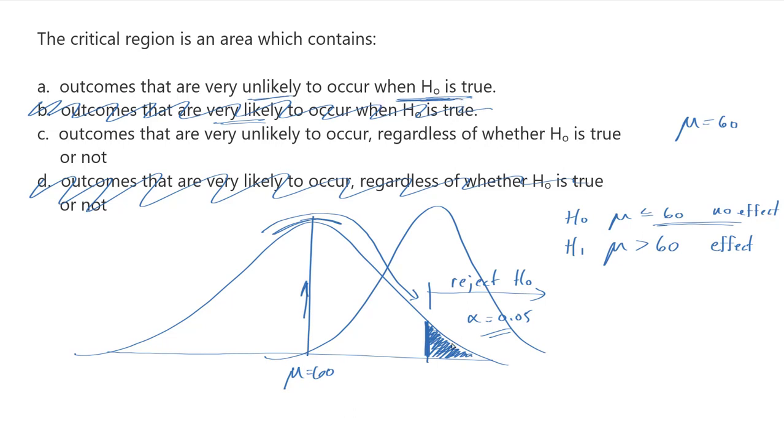These are unlikely to occur when the null is true. That means that if you actually get a result that lands in your critical region, you can say well that was unlikely to happen if the null was true. So maybe the null is not true. Maybe I should reject the null and say that there was an effect. That's effectively how the thinking or the logic behind the hypothesis test goes.